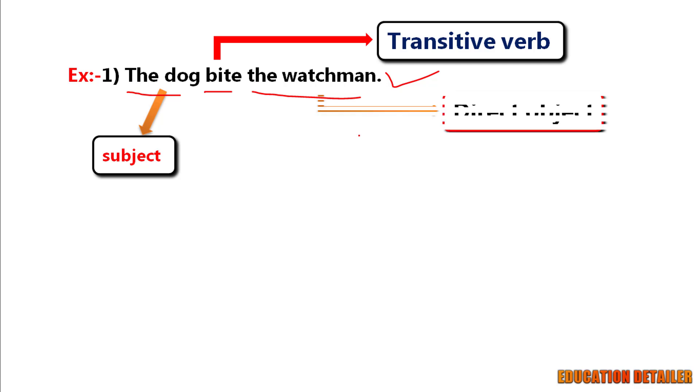And it is the direct object of the verb bite. Keep in mind, when we say the dog bite, someone will definitely ask you, the dog bite whom or what?